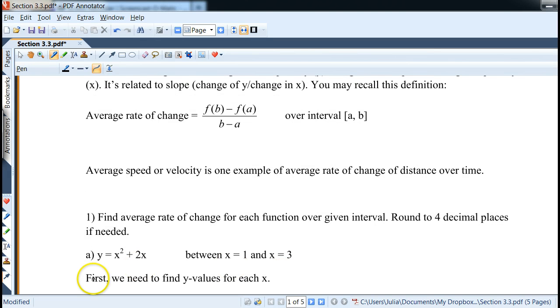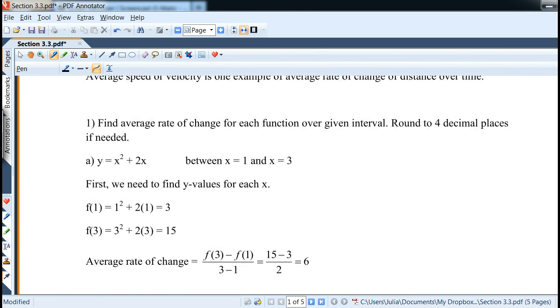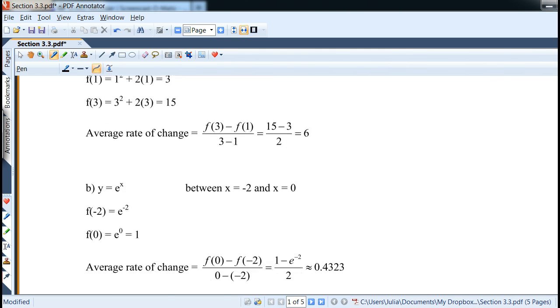So let's take a look. What if we have a function y equals x squared plus 2x between x equals 1 and x equals 3? So again, the x values are given, but we do need to find the y values for each x, which we can simply plug in back into the equation. Notice I used function notation. And then we basically plug into the formula and we calculate it very much like we would with a slope.